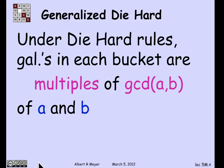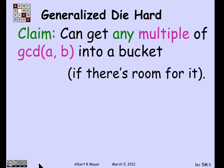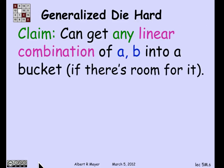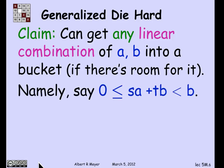This gives us a good understanding of what amounts we can get in the various buckets: we can only get multiples of the GCD. But in fact, you can get any multiple of the GCD of A and B into a bucket, providing it will fit in the bucket. That's the same as saying you can get any linear combination of A and B into a bucket if there's room for it.